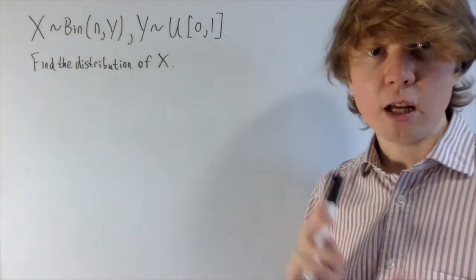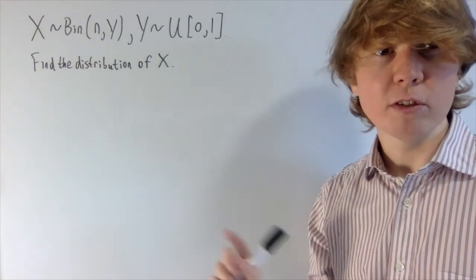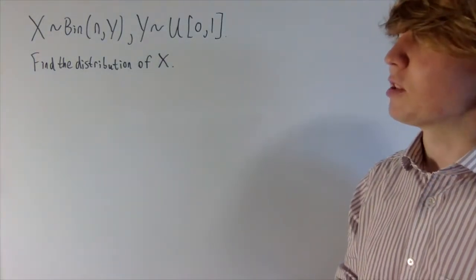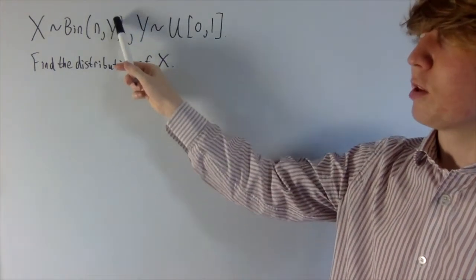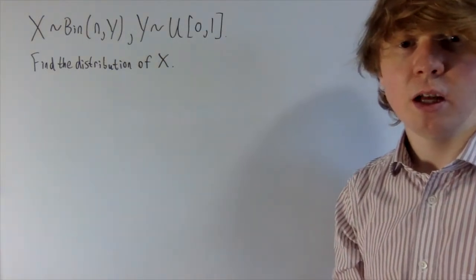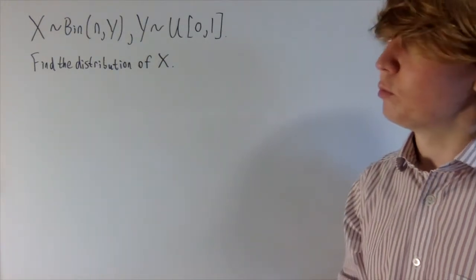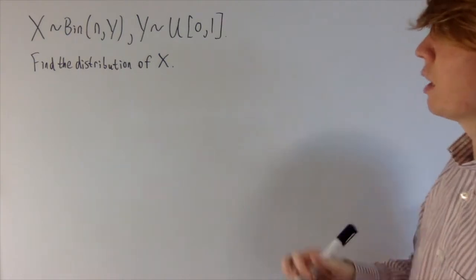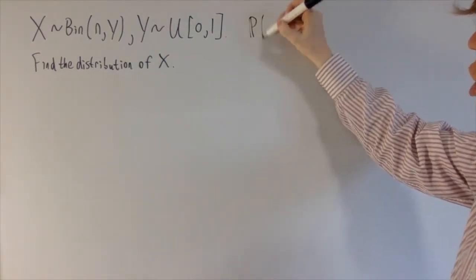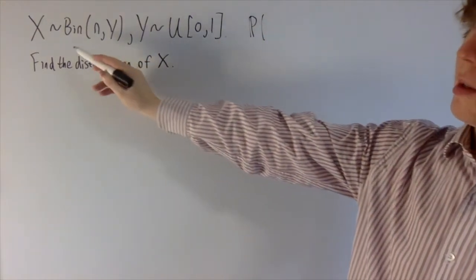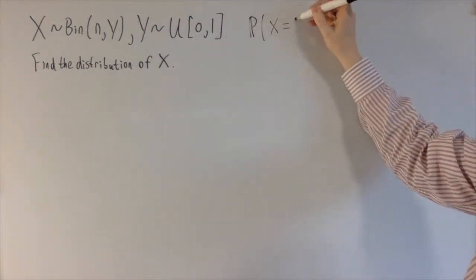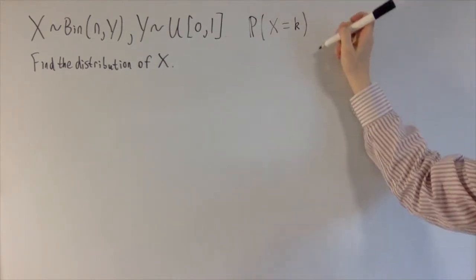This kind of problem is quite similar to a previous video on Poisson and exponential random variables, where your parameter — here parameter p — is determined by y, this random variable. This problem relies on the same kind of approach. So let's start by looking at the probability mass function for x: what's the probability x equals k for some k between 0 and n?